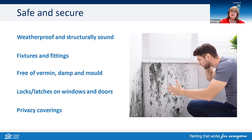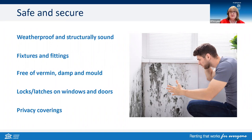So quickly stepping through what safe and secure means. Firstly, it's weatherproof and structurally sound — looking at the roof and windows to prevent water entering. The floors, walls, ceiling, roof, deck or stairs are not likely to collapse due to rot or defect. A supporting structure is not affected by significant dampness, and the property condition is not likely to cause damage to the occupant's personal property.